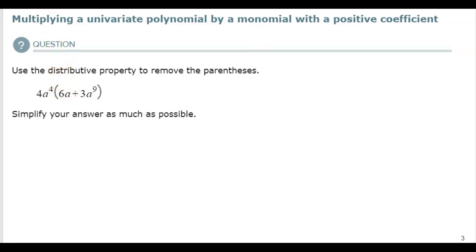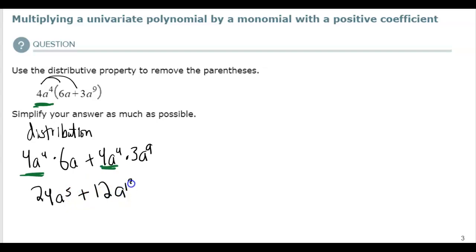Use the distributed property to remove the parentheses. So if I did distribution, I would multiply both of those by 4a to the fourth. So like everyone on the inside, the parentheses got a 4a to the fourth. And then I'd simplify that to 24a to the fifth, 12a to the thirteenth.